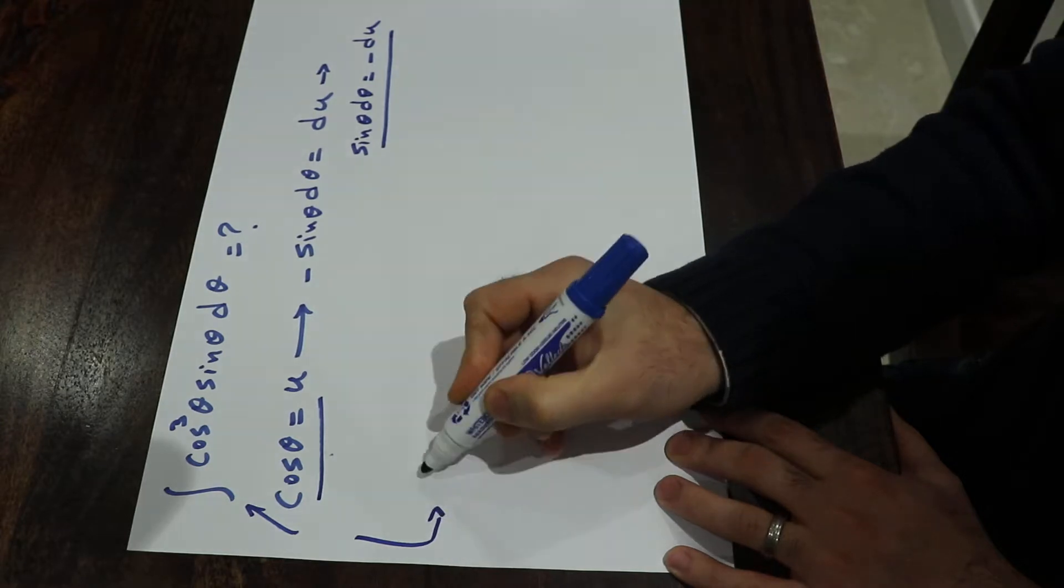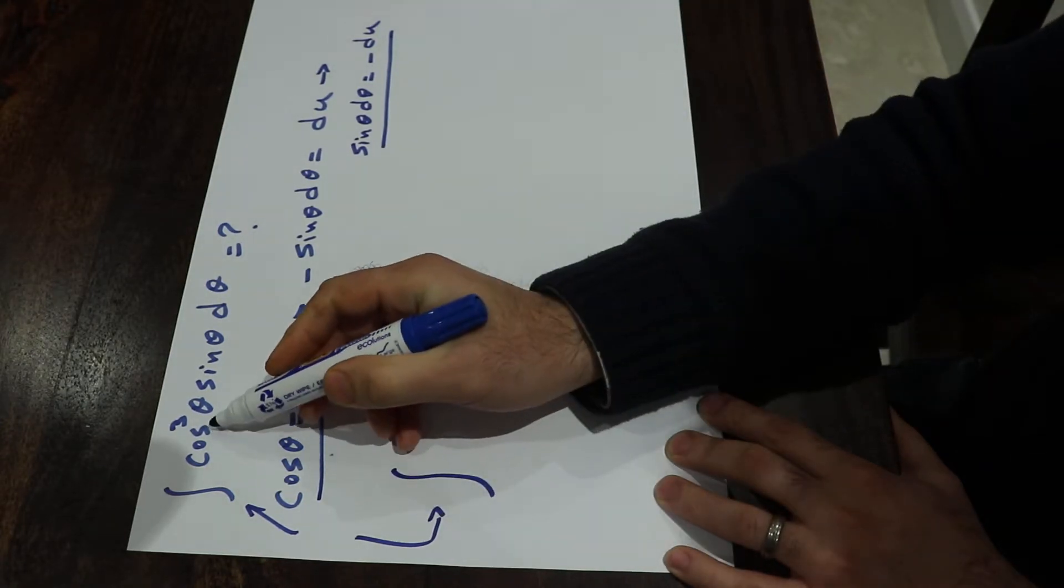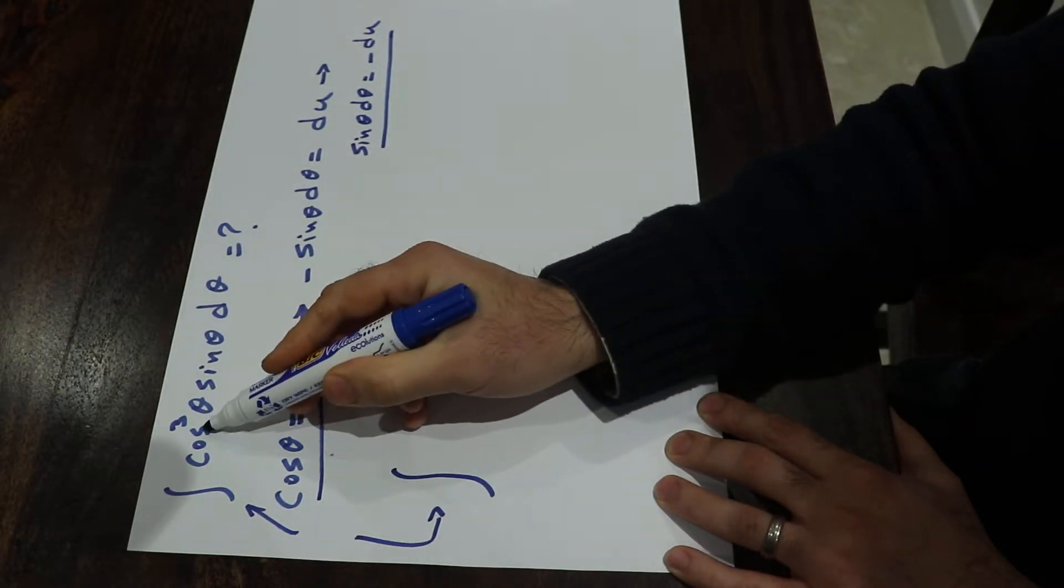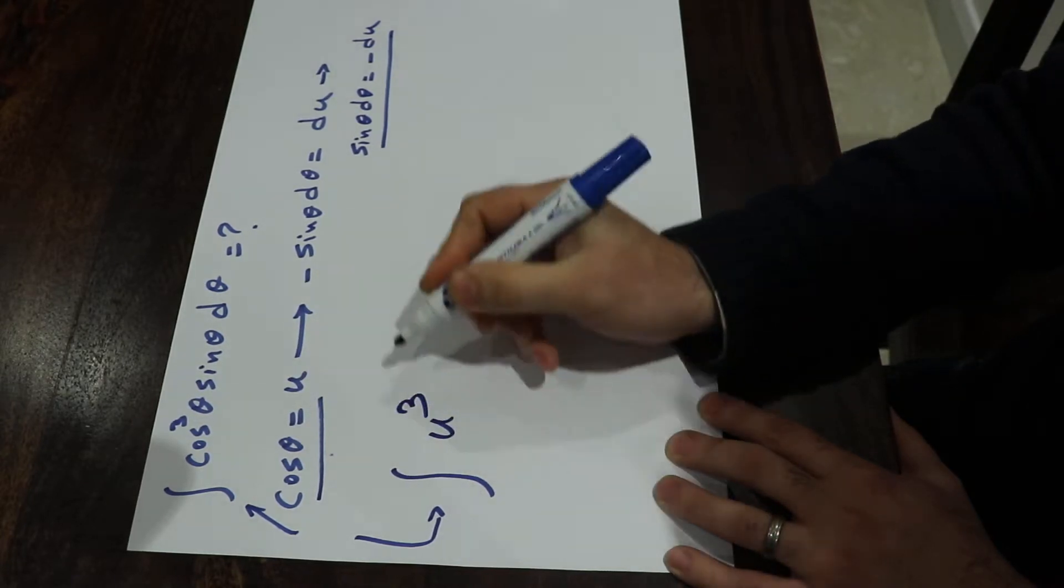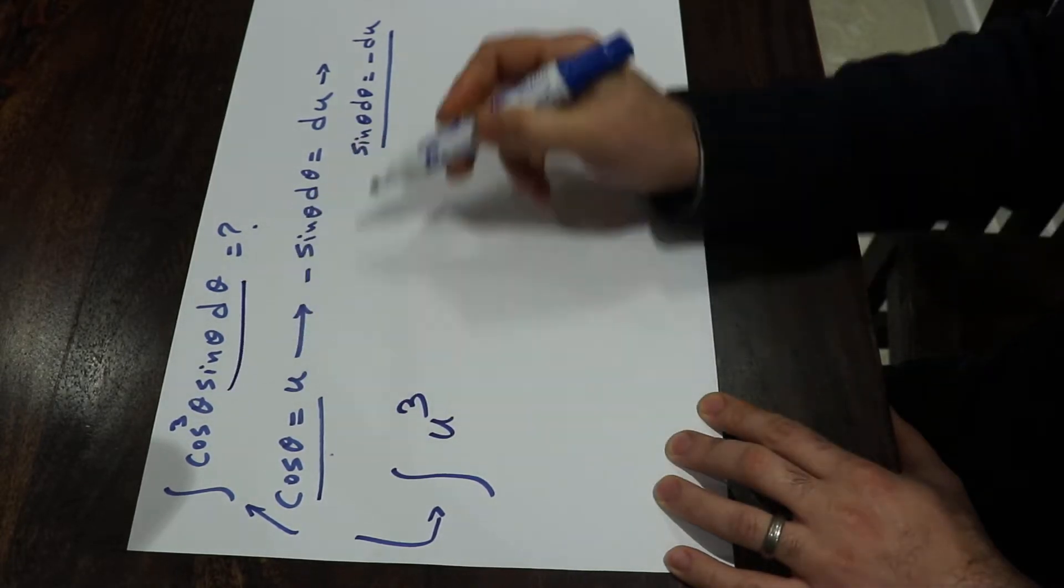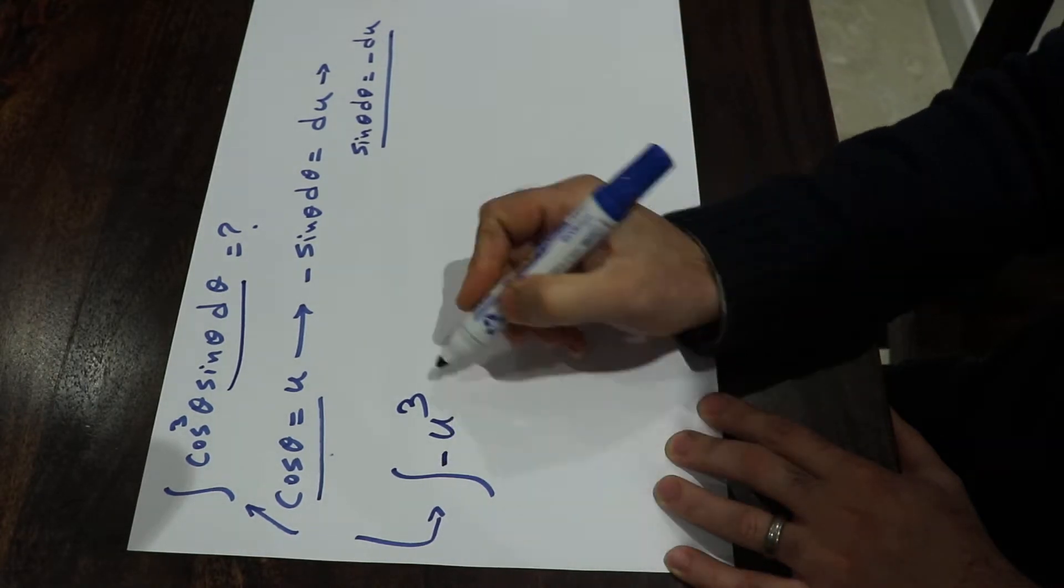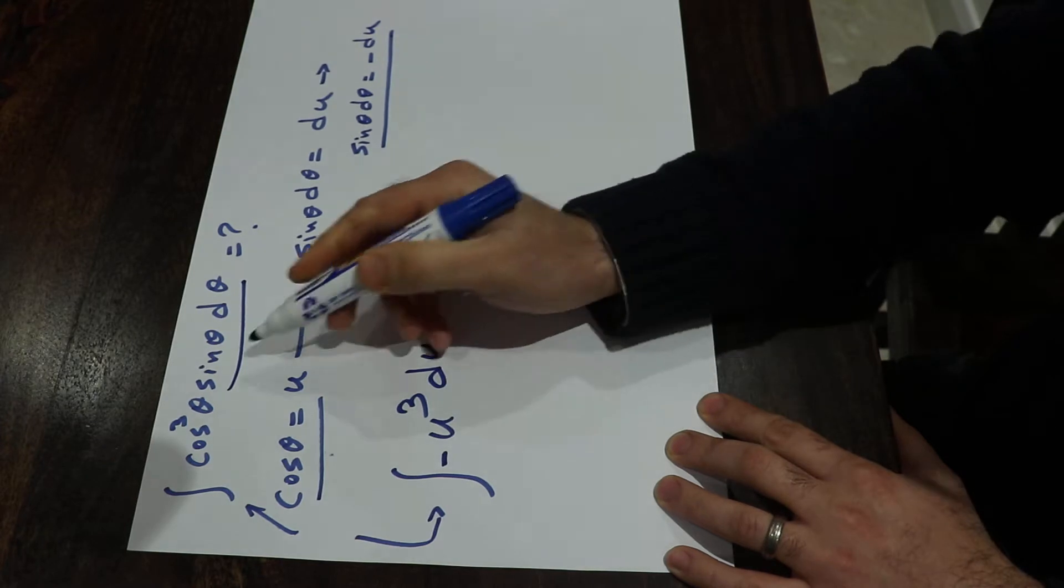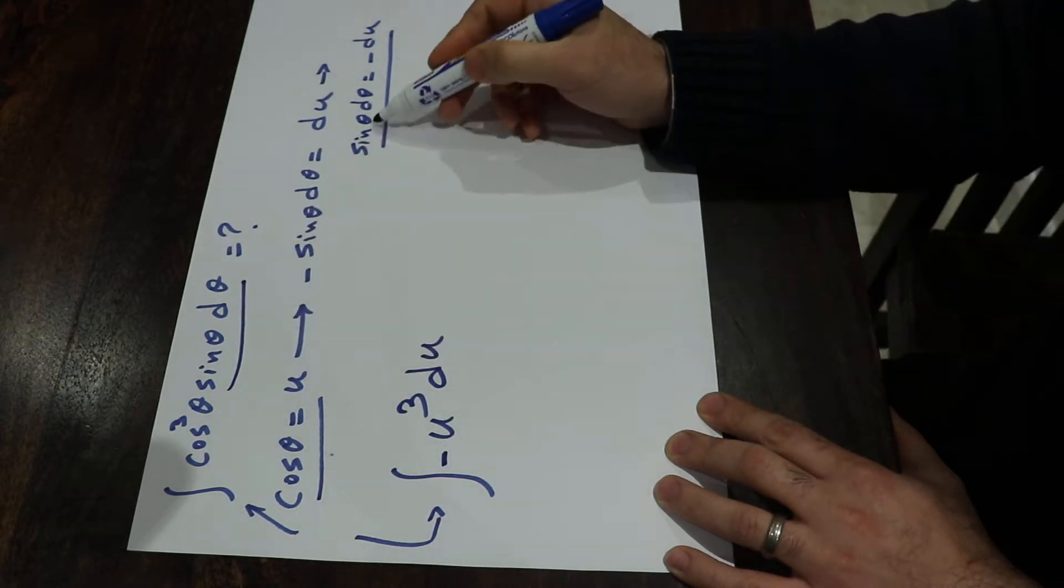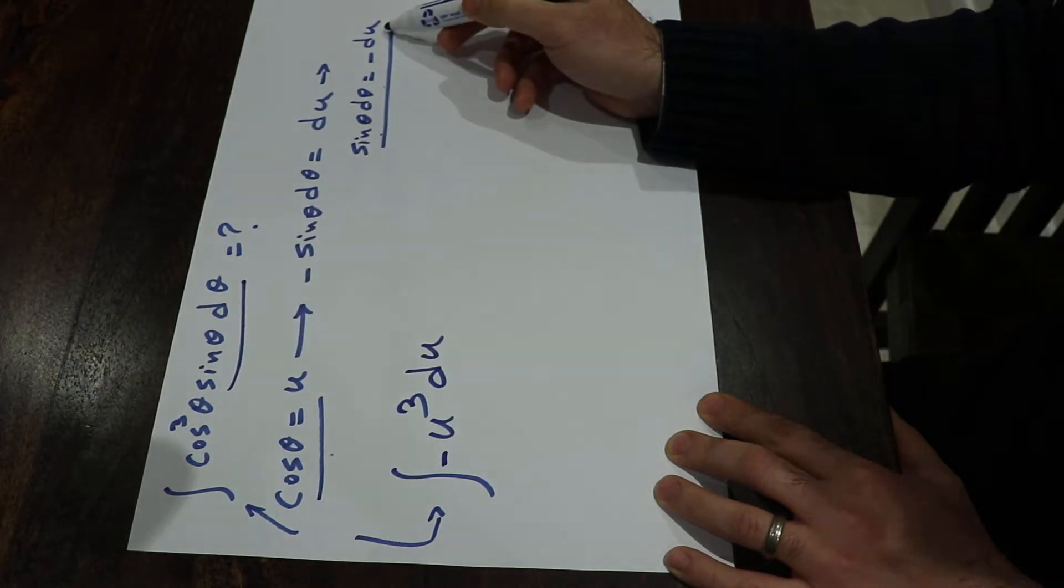you can rewrite the integral as, instead of cosine theta, I put u, therefore cosine theta with the power of 3 will be u³. Instead of sine theta times d theta, I just simply put minus du. This is sine theta times d theta, that is equal to minus du. So that will be equal to minus u³ du.